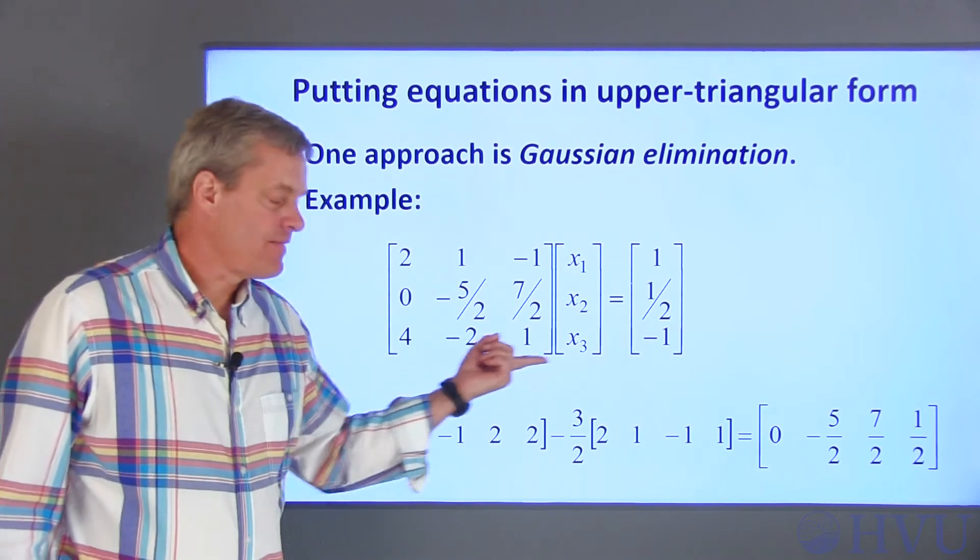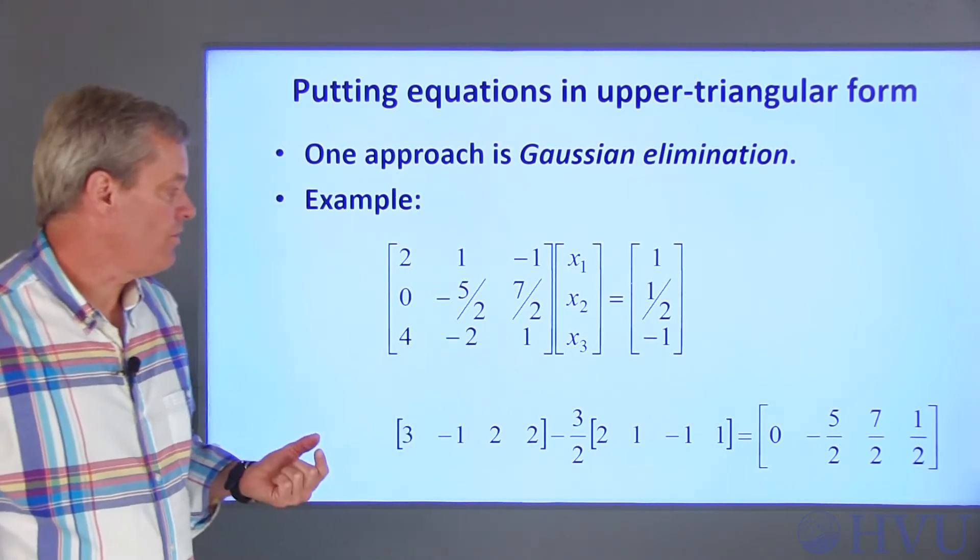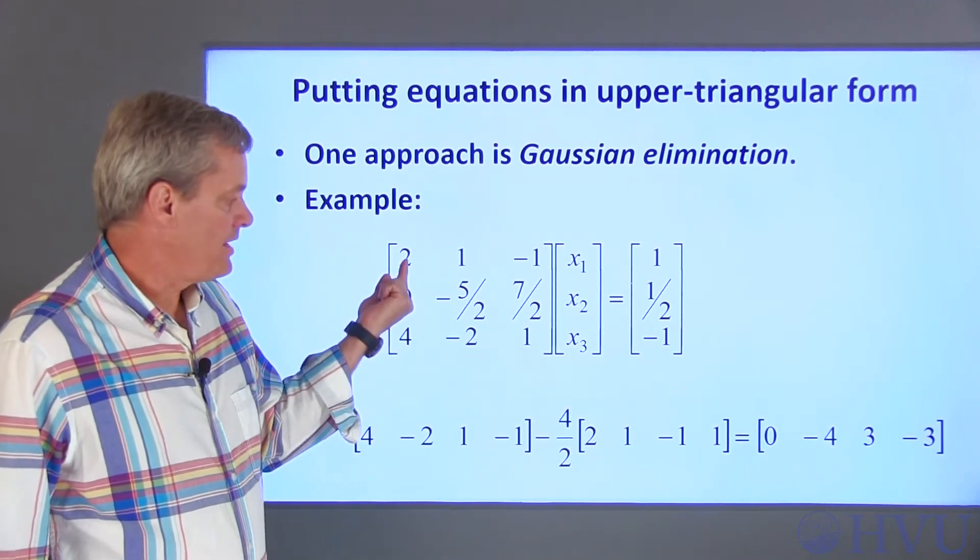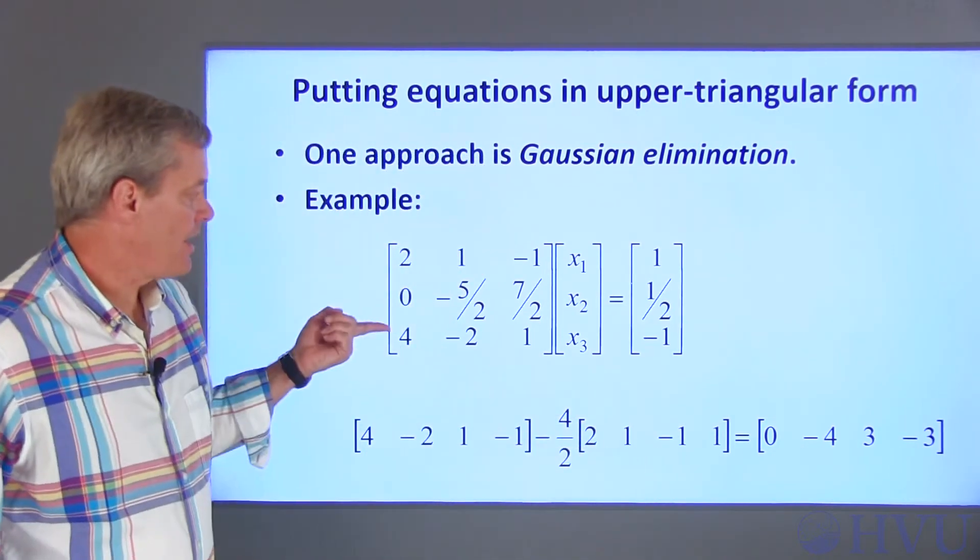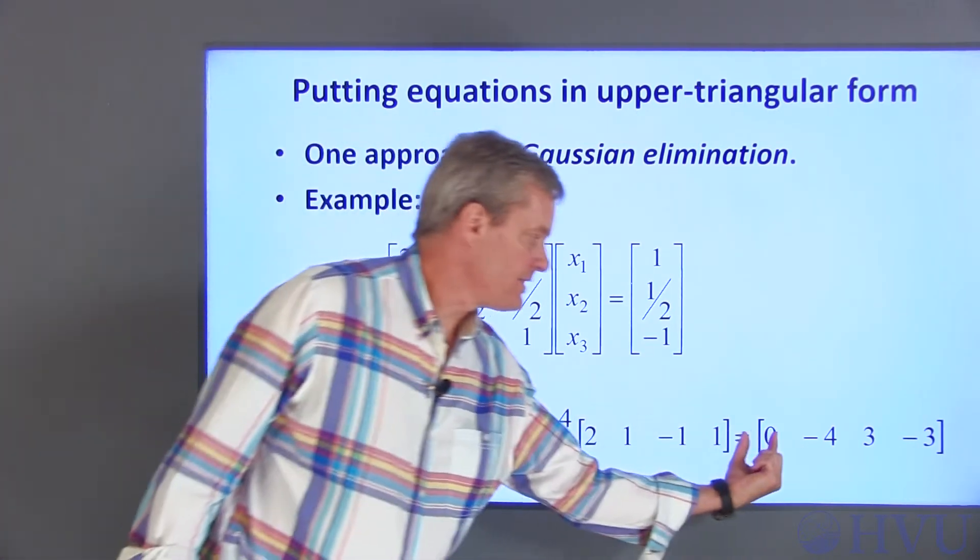I do the same thing for the first element in this row. So, 4 divided by 2 times this row, subtracted from this row, places a zero there.